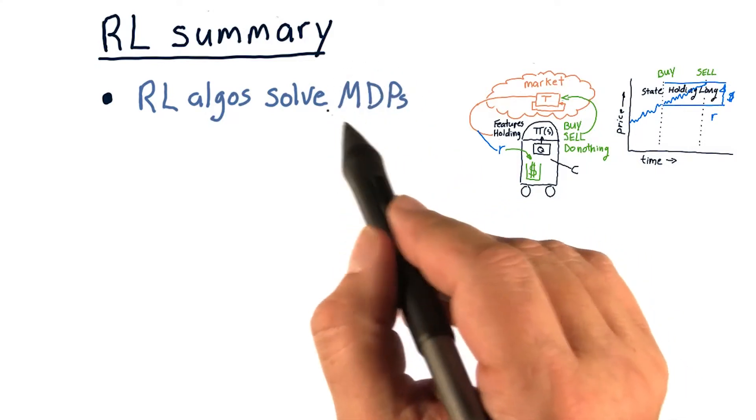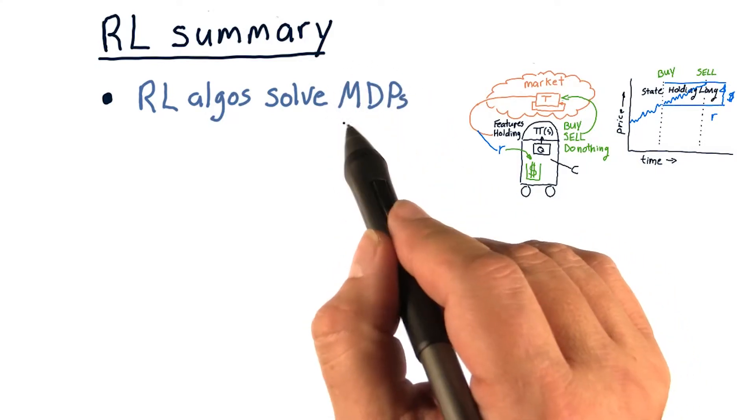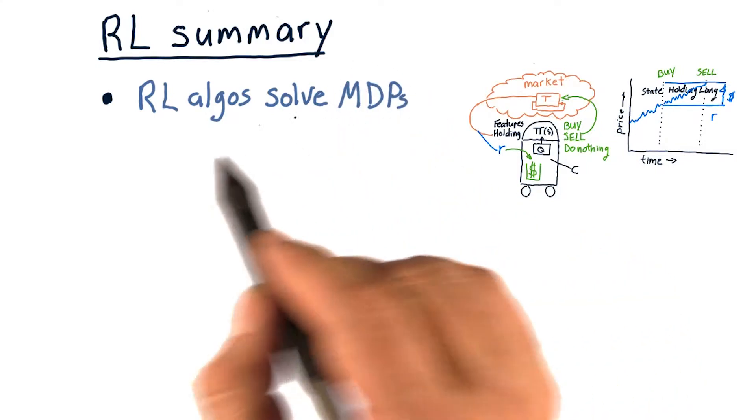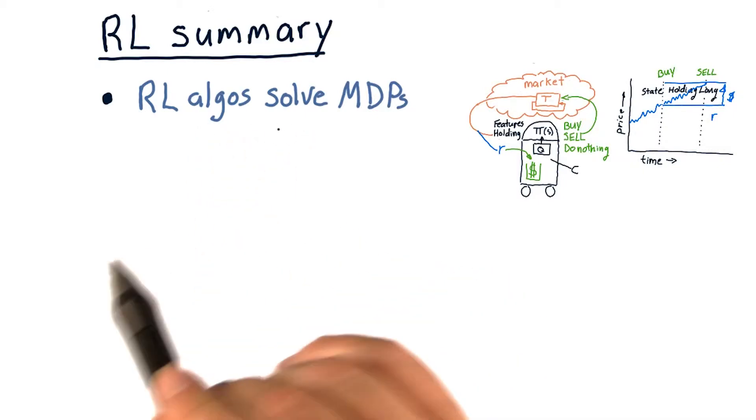The problem for reinforcement learning algorithms is a Markov decision problem, and reinforcement learning algorithms solve them.